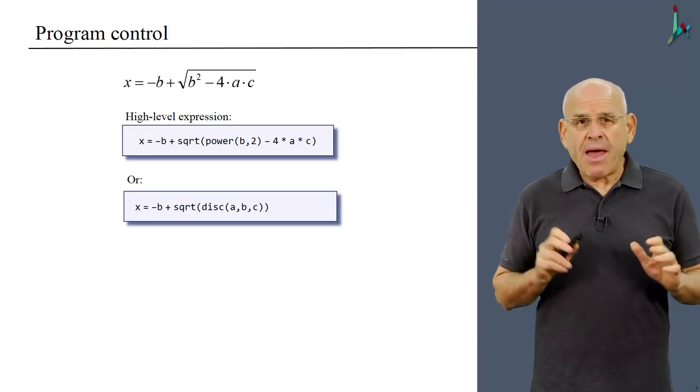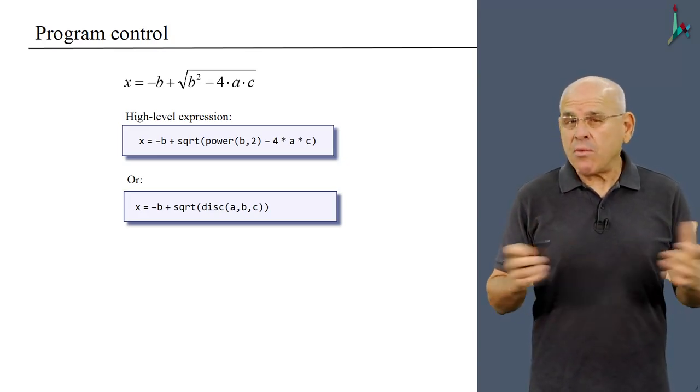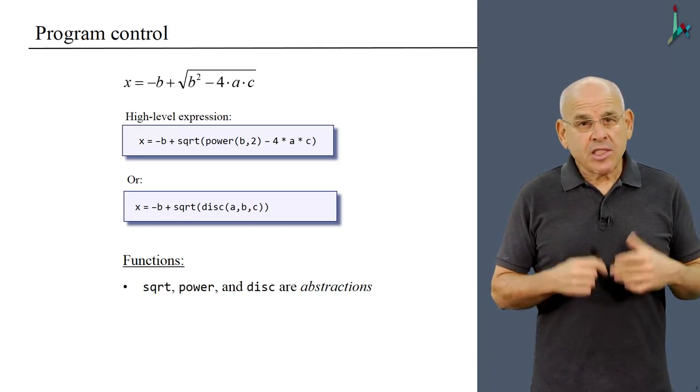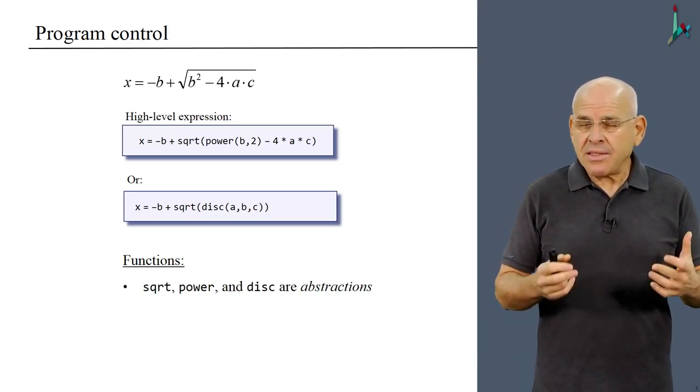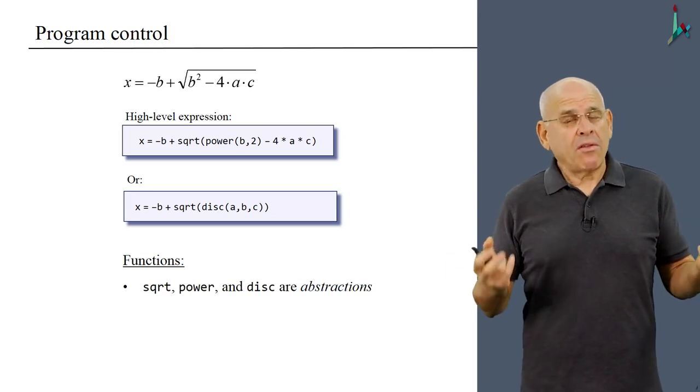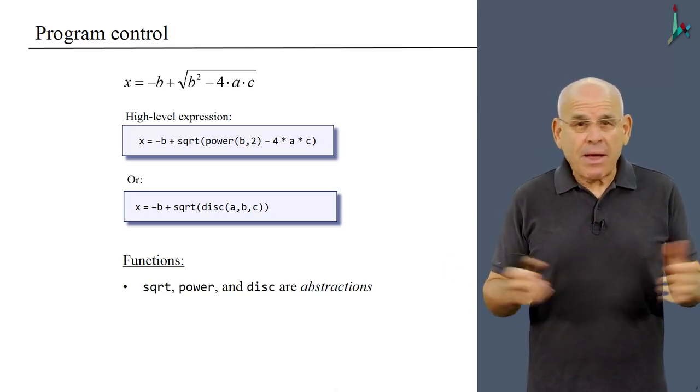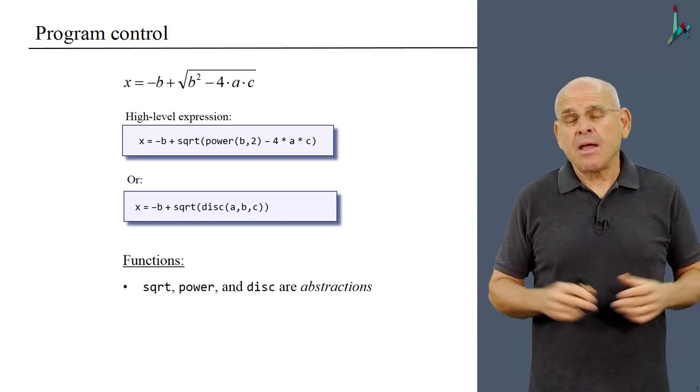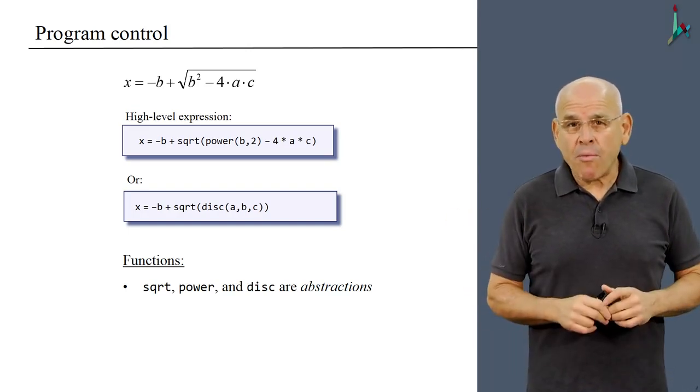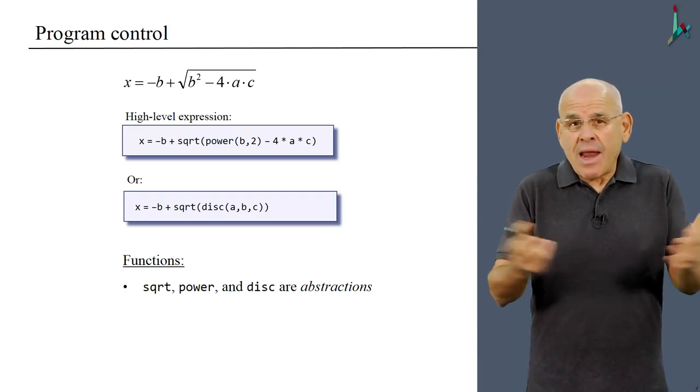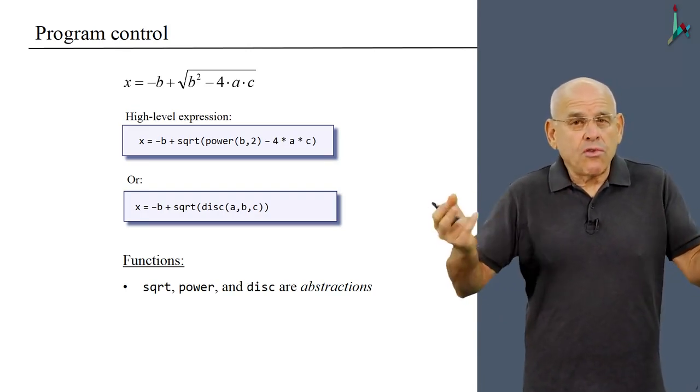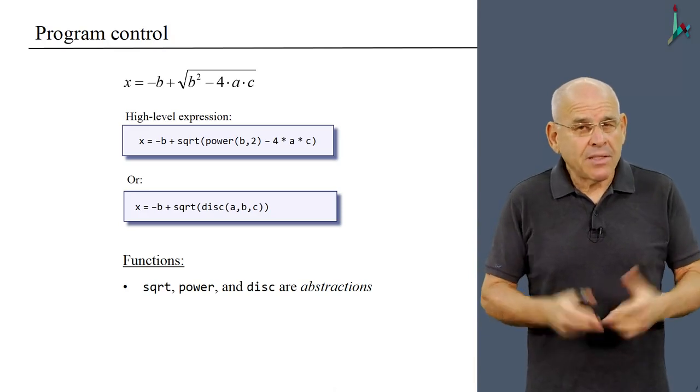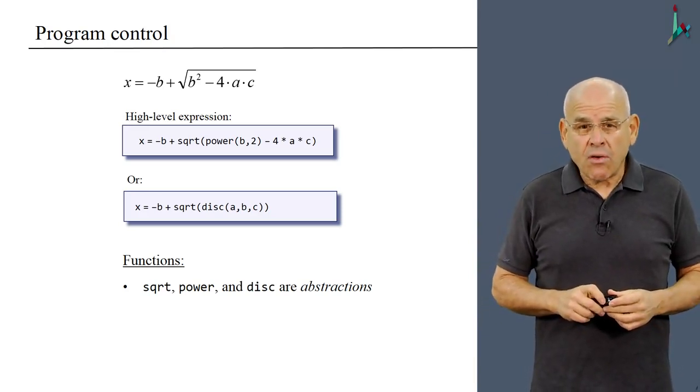So let's step back and see what we're doing in a sort of greater perspective of programming theory. Well, square root, power and disk are abstractions. They are not part of the basic language. The basic language, whether it's Java or Python or whatever, has a limited syntax and a limited repertoire of commands. But here, I'm allowed to invent so-called new commands as I please, which is wonderful. Whenever I need a new function, I just make it up, as I just did with this function that I called disk.